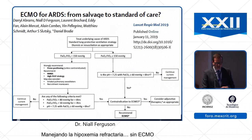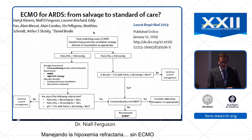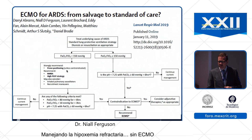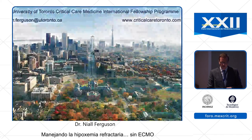I still think this algorithm is fairly good for getting us through most patients with refractory hypoxemia: treat the underlying cause, titrate your PEEP, prone positioning, neuromuscular blockade and higher PEEP, then think about inhaled pulmonary vasodilators and recruitment maneuvers. Call your ECMO center around this time, after you have the patient in the prone position. Thank you very much.